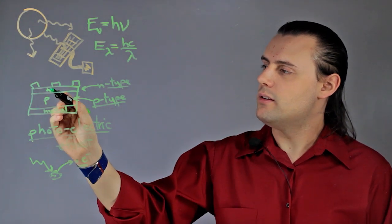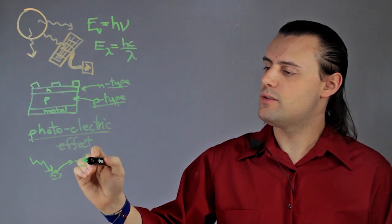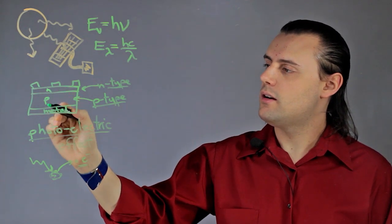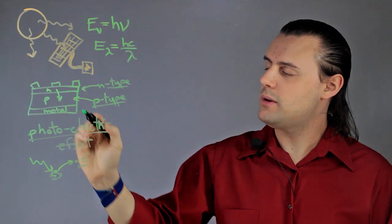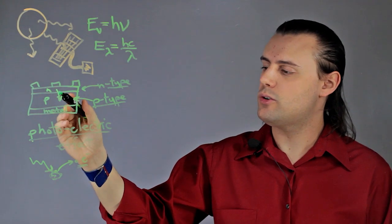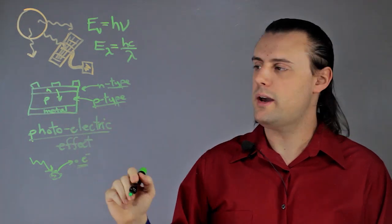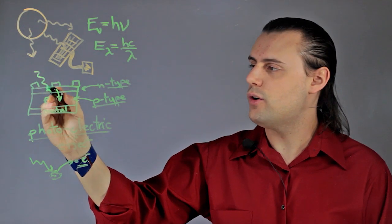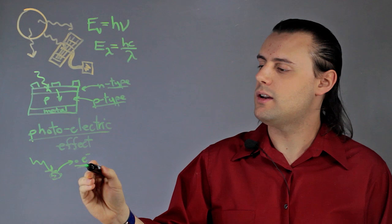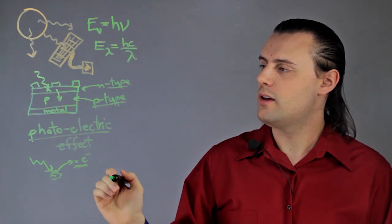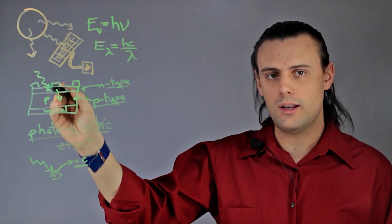When this happens, the negatively charged particle will go towards the p-type material, so you'll be generating what's called an electron-hole pair every time a photon knocks one of these negatively charged particles off.